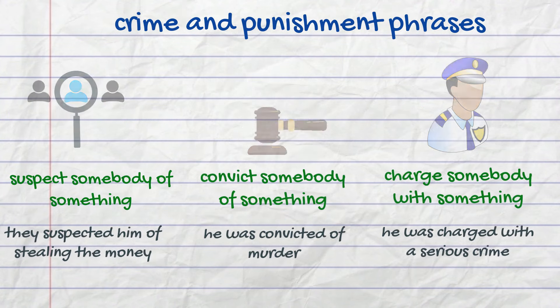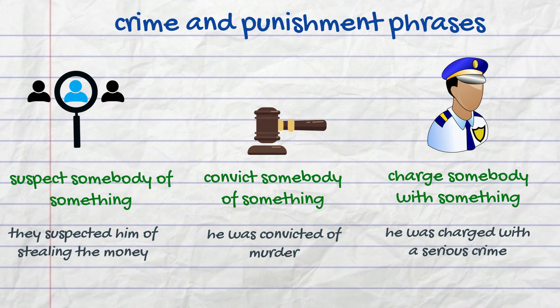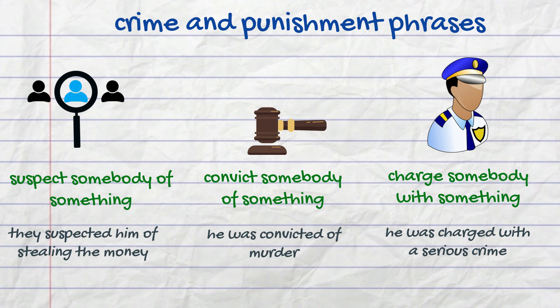There is also some confusion with prepositions in some phrases. We should say 'to suspect somebody of something,' but not 'in' or 'about' something. For example: they suspected him of stealing the money. The same preposition is used with the verb 'convict.' For example: he was convicted of murder. And the verb 'charge' requires the preposition 'with.' For example: he was charged with a serious crime.